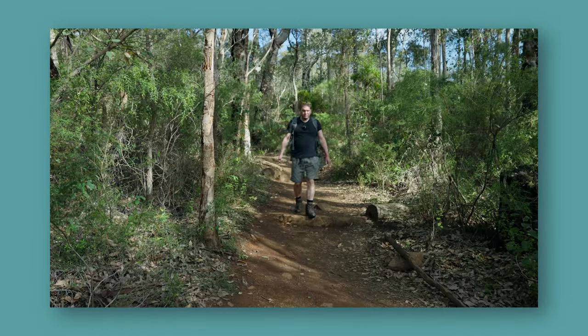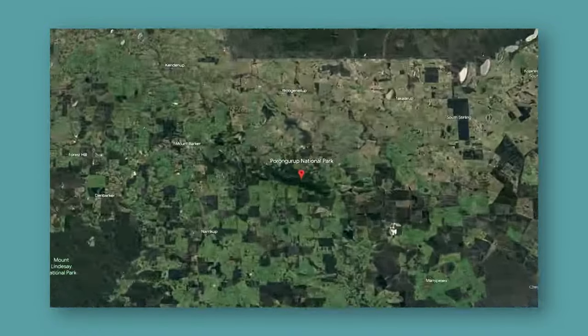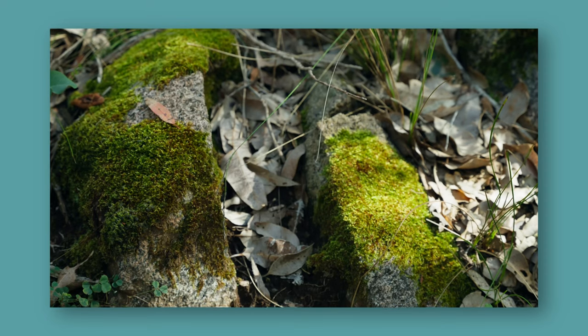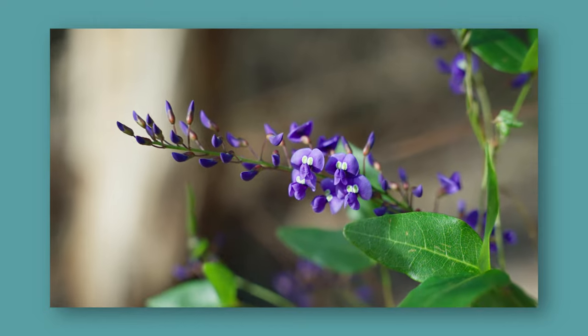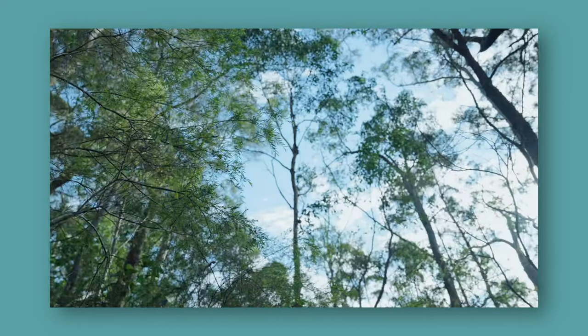So I'm here in the Porongaup National Park which is about a four hour drive south of Perth here in Western Australia. This range was formed over 1.2 billion years ago when Antarctica and Australia crashed into each other. There's been over 700 species of plants identified growing in this park which is incredible to have such biodiversity in such a relatively small area.